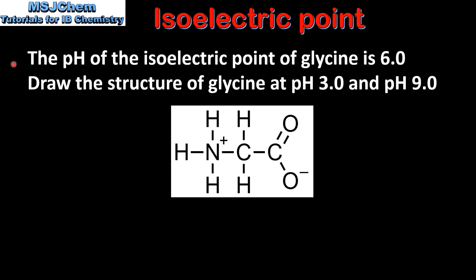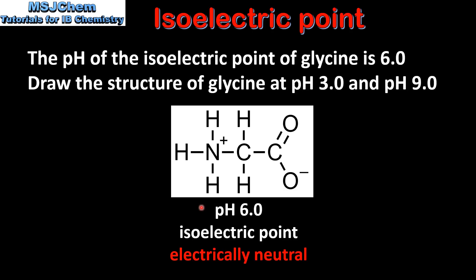Let's try an example. The pH of the isoelectric point of glycine is 6.0. Draw the structure of glycine at pH 3.0 and pH 9.0. Here we have the structure of glycine at pH 6.0, which is its isoelectric point.